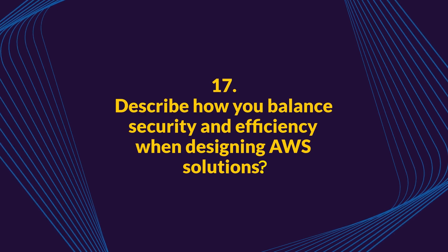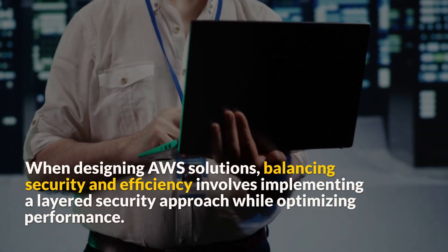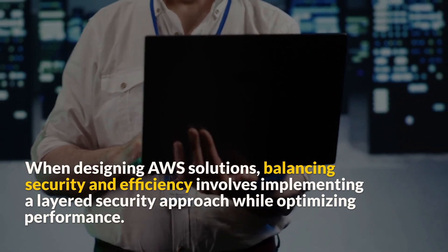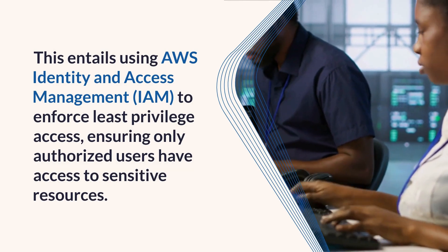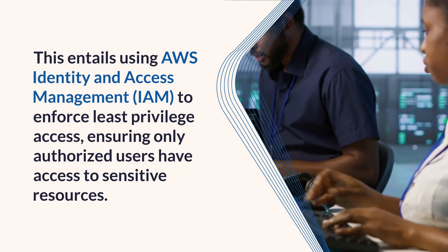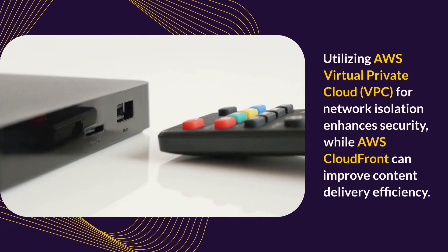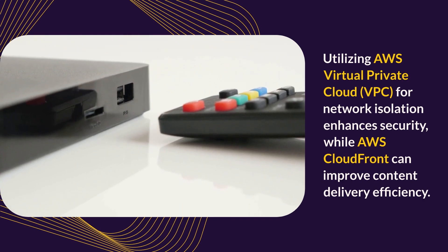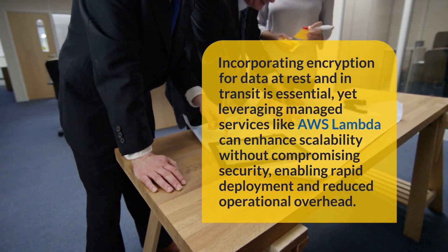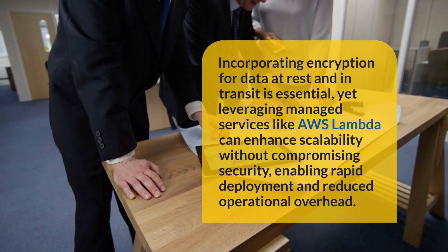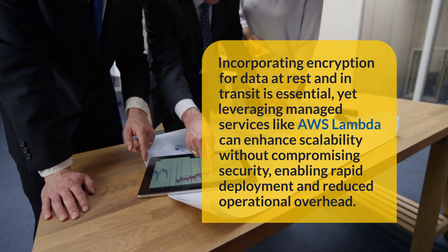Question 17: Describe how you balance security and efficiency when designing AWS solutions. Balancing security and efficiency involves implementing a layered security approach while optimizing performance. This entails using AWS Identity and Access Management to enforce least privilege access, ensuring only authorized users have access to sensitive resources. Utilizing AWS Virtual Private Cloud for network isolation enhances security, while AWS CloudFront can improve content delivery efficiency. Incorporating encryption for data at rest and in transit is essential, yet leveraging managed services like AWS Lambda can enhance scalability without compromising security, enabling rapid deployment and reduced operational overhead.